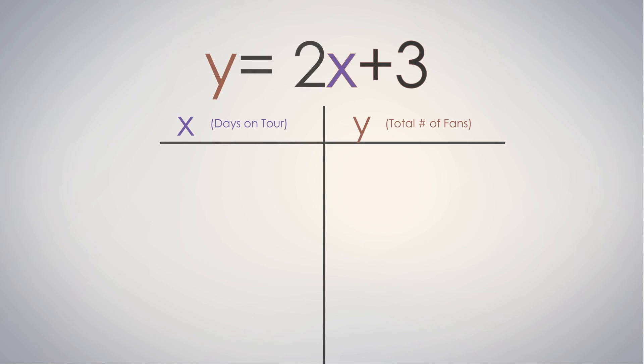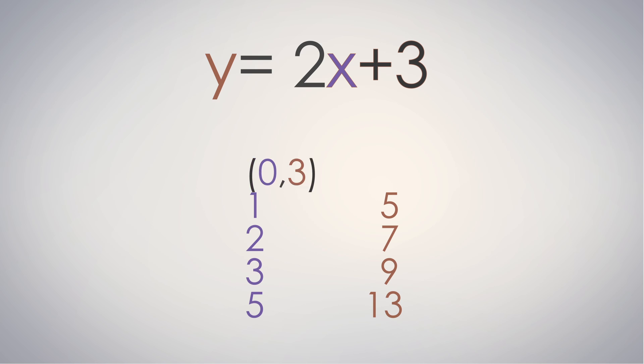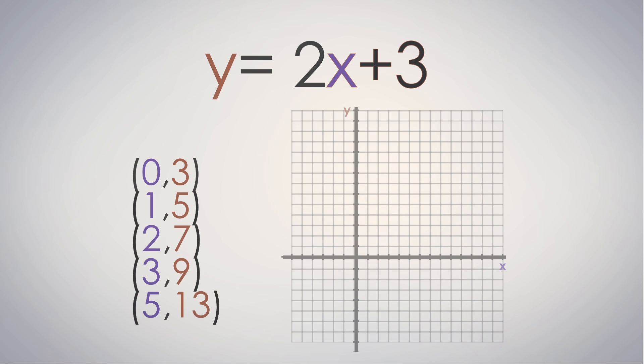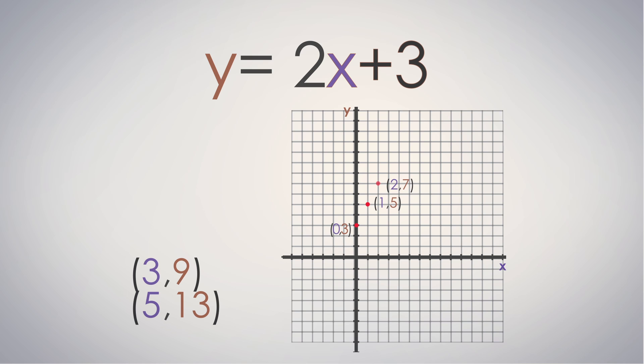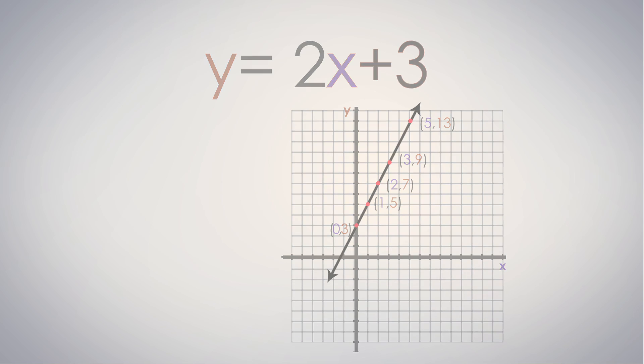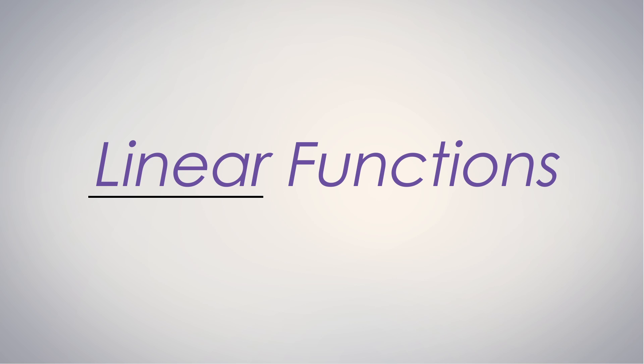Let's build a table to see some number values and get to some graphing. Now let's plot the points from our table. What do you notice about the arrangement of these points? That's right, they make a straight line, which is why we call these linear functions.